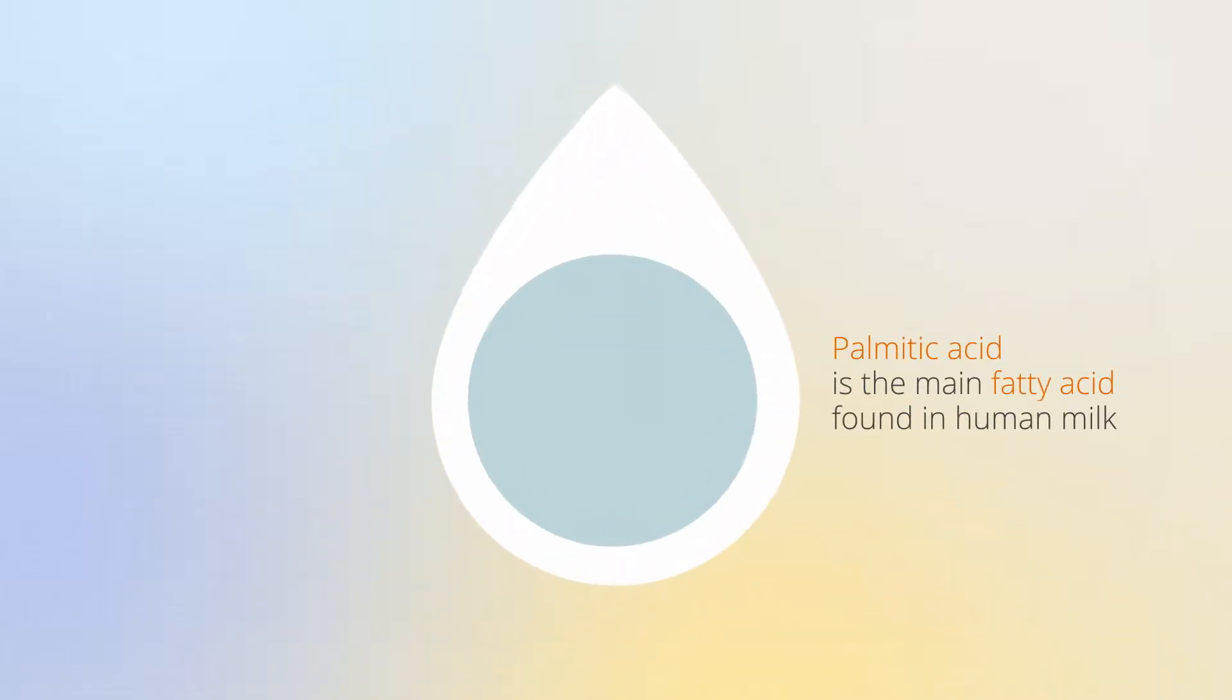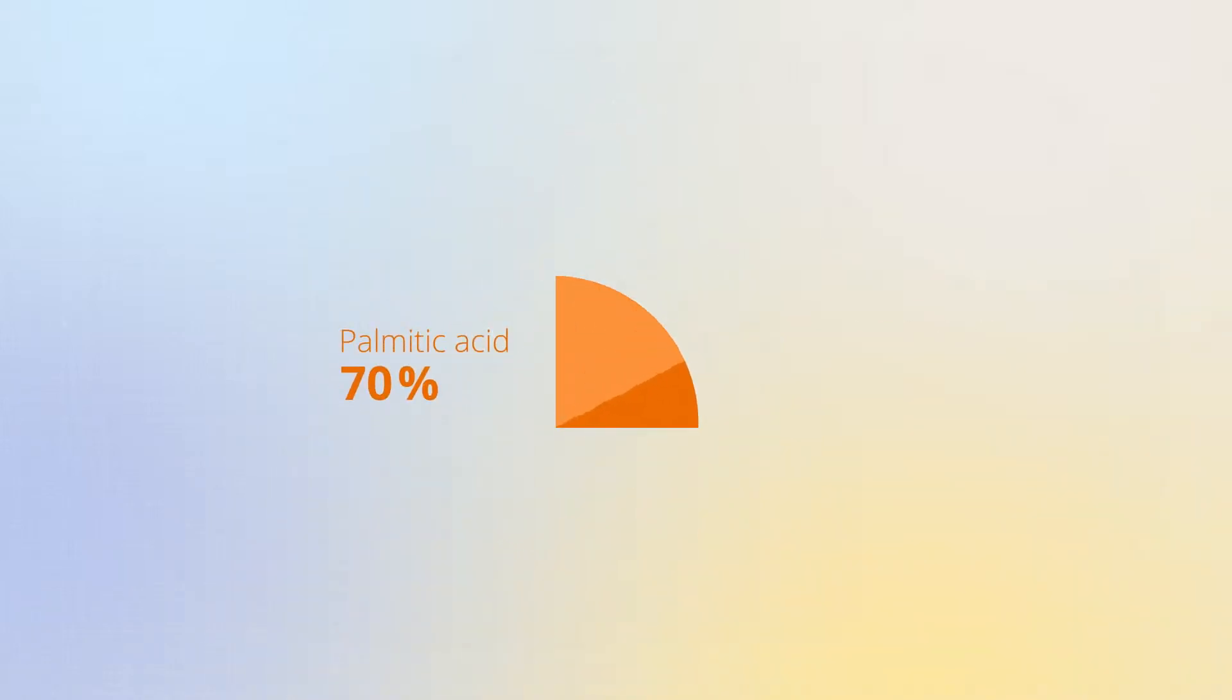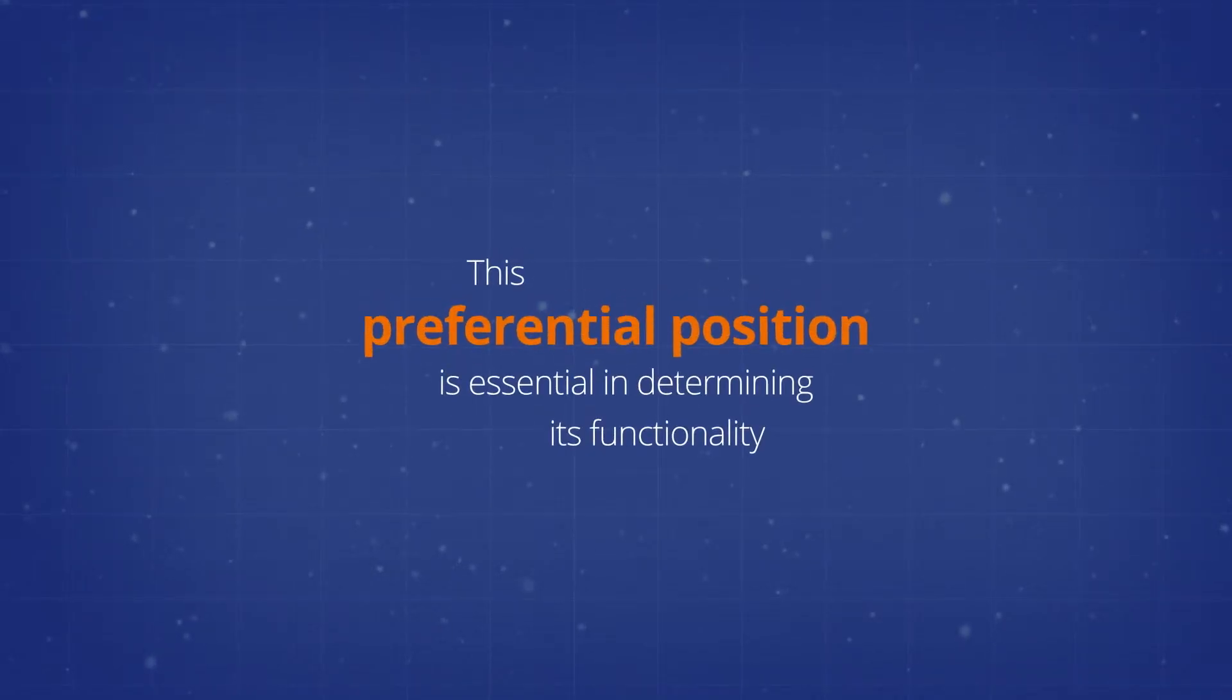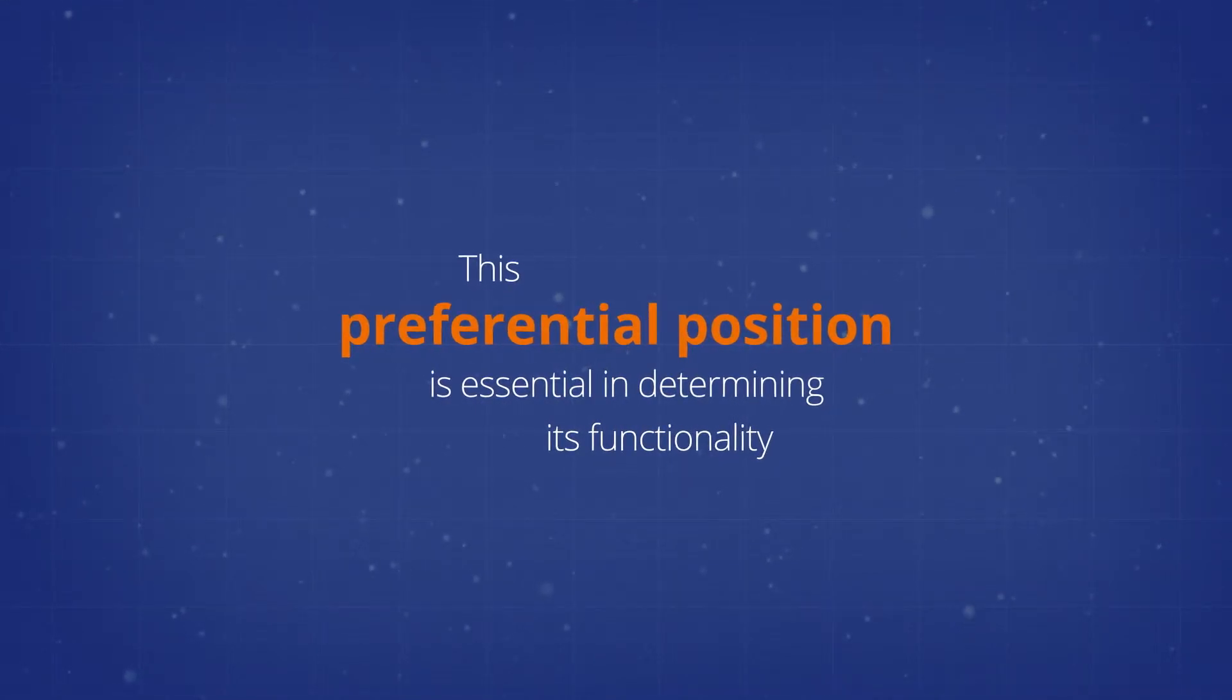Palmitic acid is the main fatty acid found in human milk, representing around 25% of total fatty acids. 70% of the palmitic acid in breast milk is esterified to the SN2 position, also known as the beta position at the centre of the triglyceride. This preferential position is essential in determining its functionality.